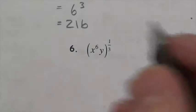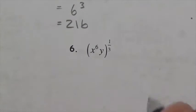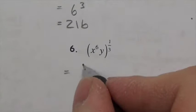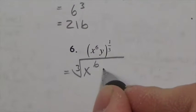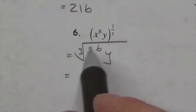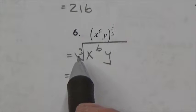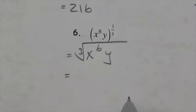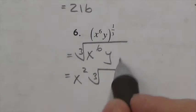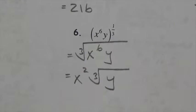For (x to the sixth y) to the 1 third: the base is x to the sixth y, so this is the cube root of x to the sixth y. For a cube root I look for triplets: six xs give two groups of three, so x squared comes out. There's only one y, so it stays under the radical. The simplified answer is x squared times the cube root of y.